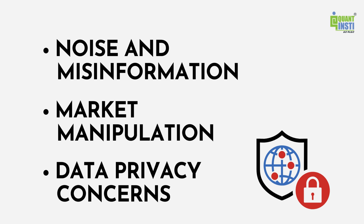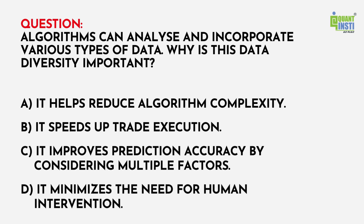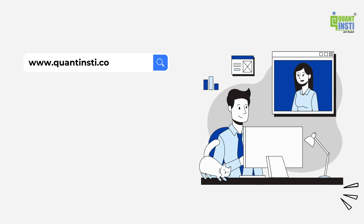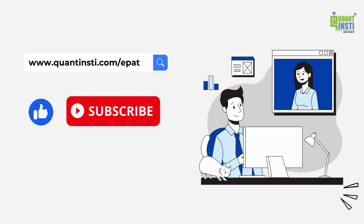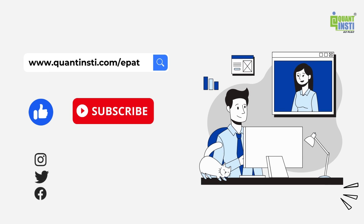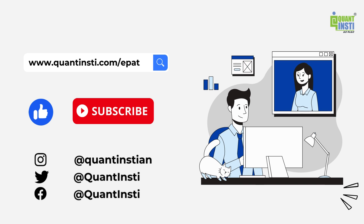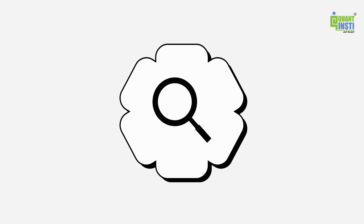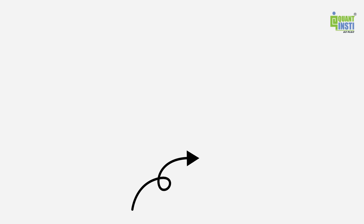At the beginning of this video, we asked you to answer this question: algorithms can analyze and incorporate various types of data — why is this data diversity important? The right answer is C: it improves prediction accuracy by considering multiple factors. To learn more about our courses, head over to our website and get in touch with a course counselor. Don't forget to like and subscribe to our channel. Stay tuned for future videos that will enhance your trading knowledge. Want to discover more algo trading strategies? Check out our playlist for more such videos.